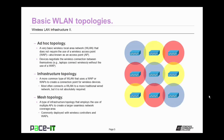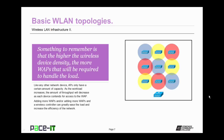Then there's the mesh topology. This is a type of infrastructure topology that employs the use of multiple access points to create larger seamless network coverage areas. They're commonly deployed with wireless controllers and wireless access points. The higher the wireless device density, the more wireless access points that will be required to handle the load.